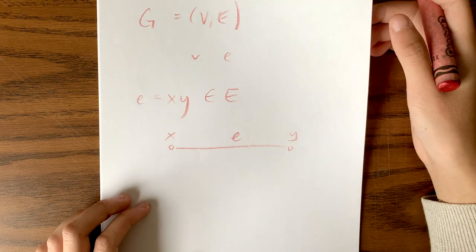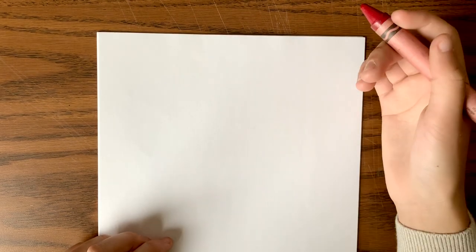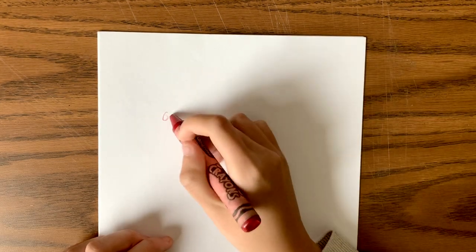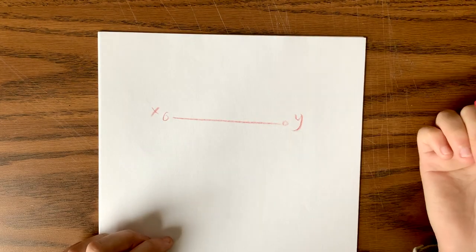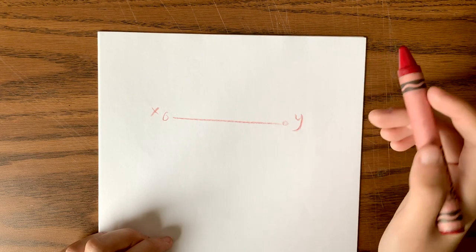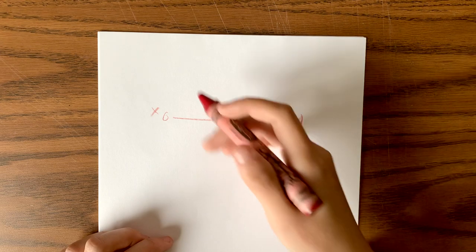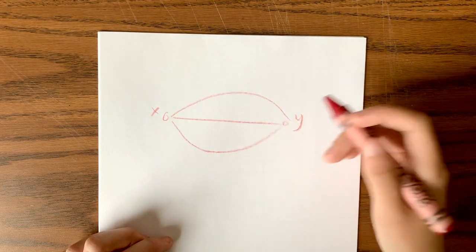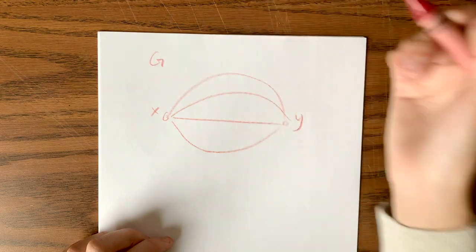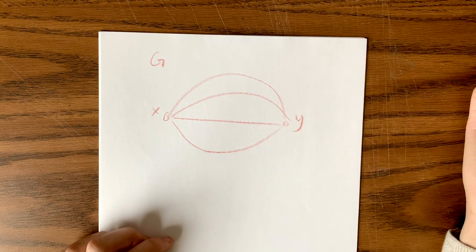Let's talk about a couple of common graphs you might see. The first one is called a multigraph, and this is where multiple edges are allowed between two adjacent vertices. So for example, if we have vertex x and vertex y, a multigraph has multiple edges between those two adjacent vertices. We can draw a whole bunch of different edges between these two vertices, and we'd call this graph G a multigraph.